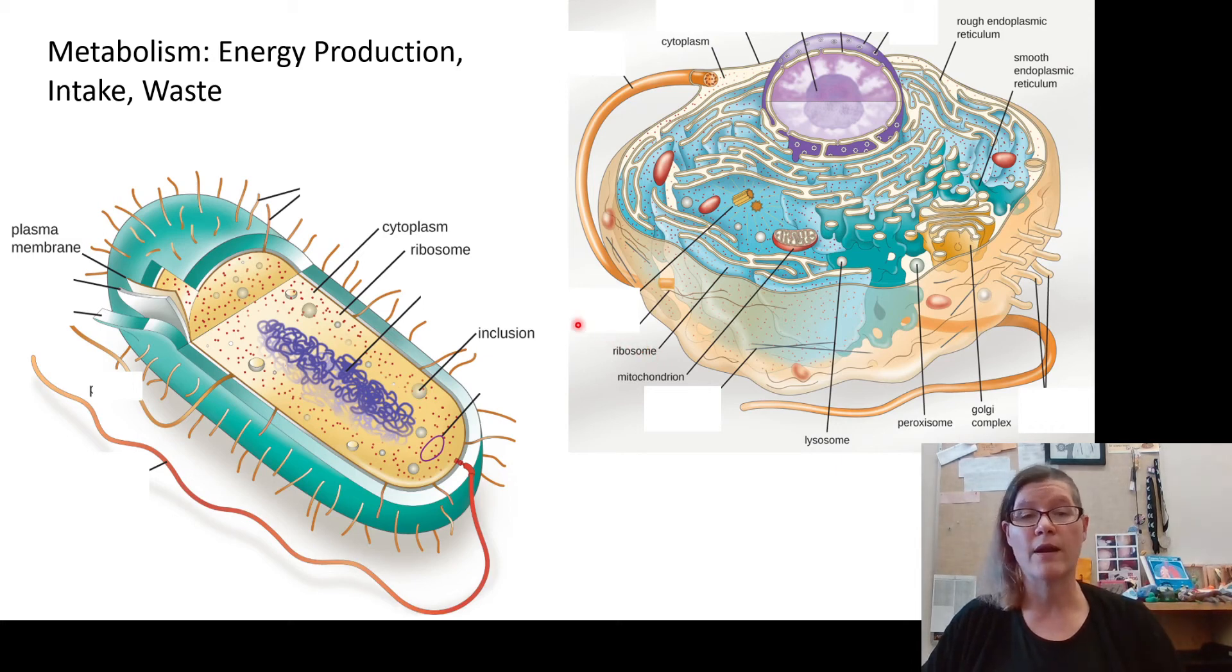In prokaryotic protein production, the ribosome simply gets the information through an RNA very quickly from the nucleoid and produces the protein right into the cytoplasm. However, in the eukaryotic cell, the ribosomes typically produce the proteins associated with the endoplasmic reticulum, which go through a whole process, drop things off in the Golgi, have their proteins adjusted. So it's a much more multi-layered process with many more structures and a lot more membranes, but still does the same job.